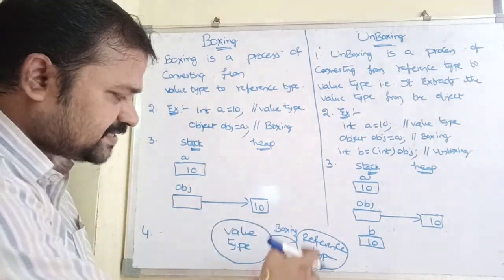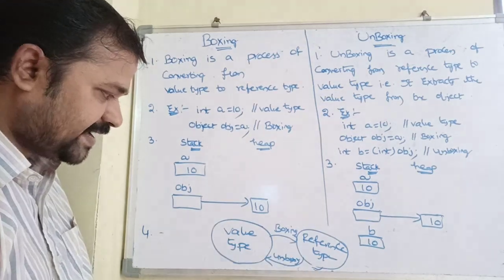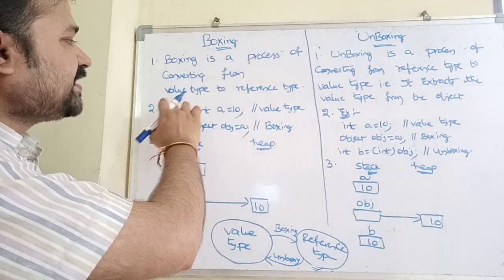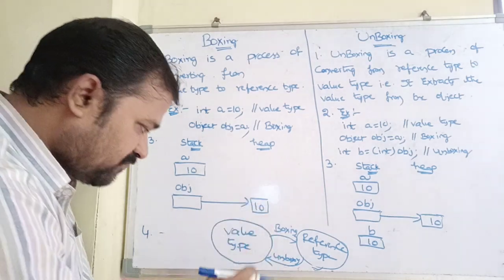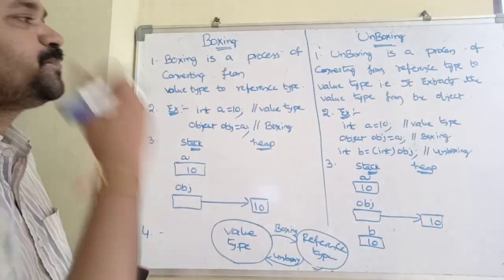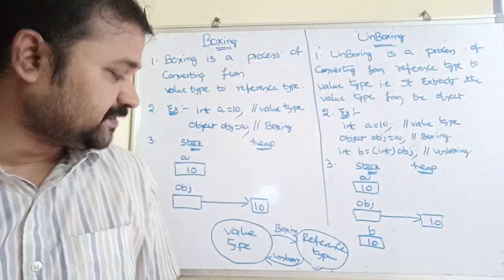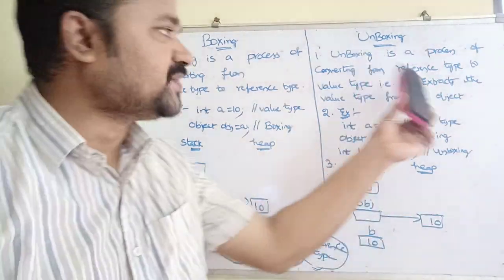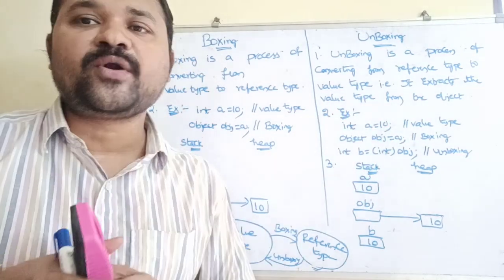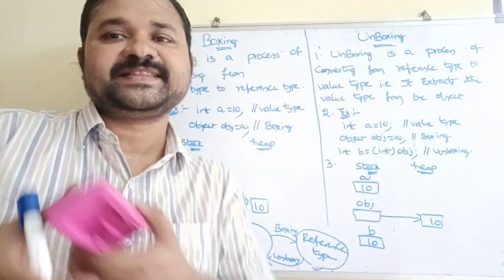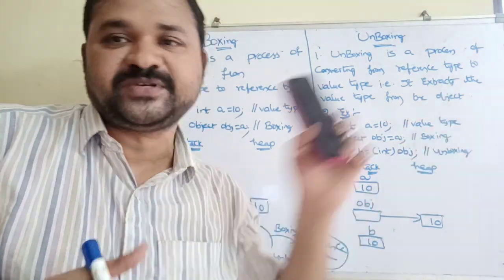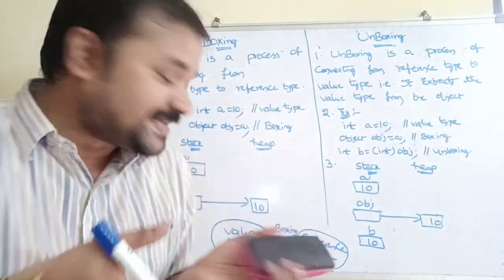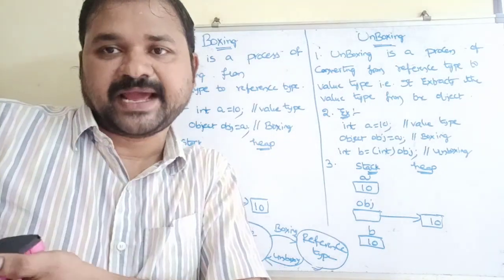Here we have a block diagram for boxing and unboxing. Boxing is a process of converting from value type to reference type. Unboxing is a process of converting from reference type to value type — it extracts the corresponding value from the reference. The best example for a reference type is object.